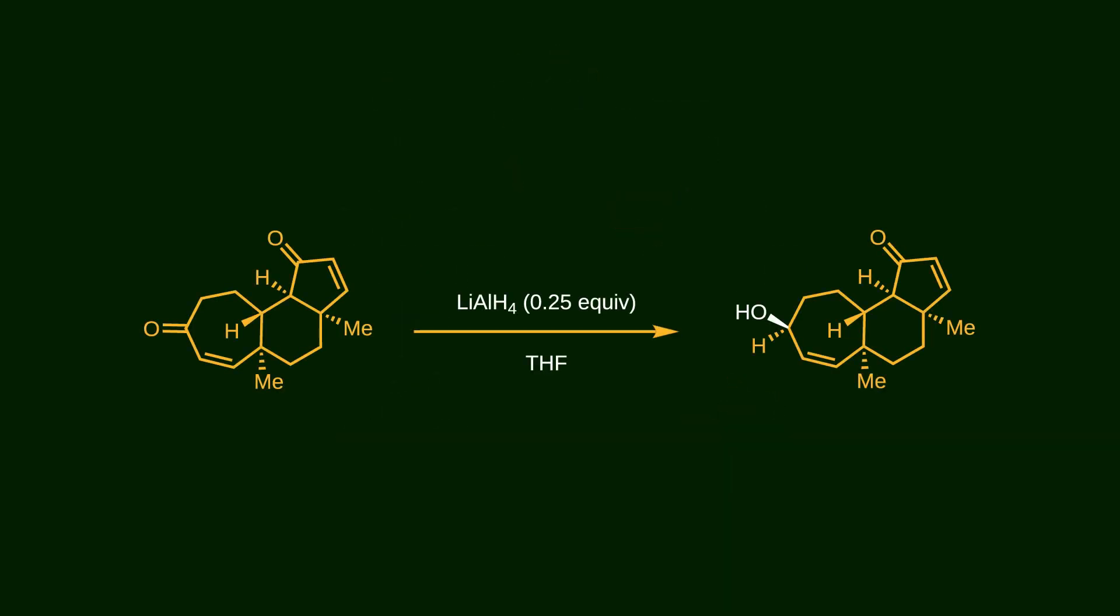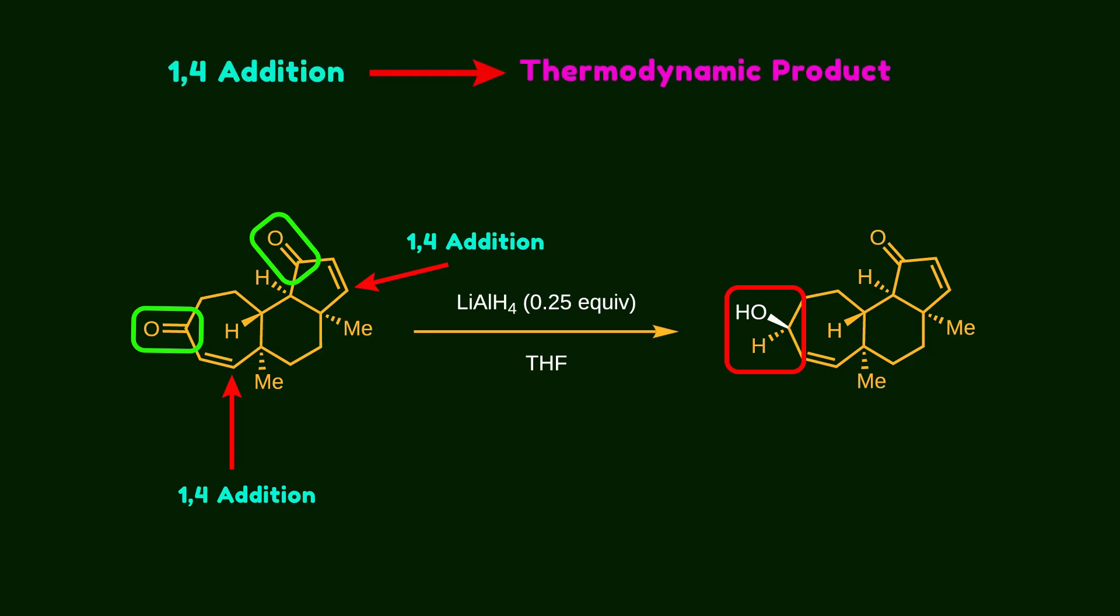In the next step, this intermediate is reduced by lithium aluminum hydride. There are actually two conjugated ketones that can potentially be attacked by hydride. Moreover, for each conjugated ketone, both 1,2 and 1,4-addition pathways are possible. However, only one specific carbonyl group is reduced selectively. Keep in mind that 1,4-addition is a thermodynamic product while 1,2-addition is a kinetic product, meaning it proceeds faster than 1,4-addition.